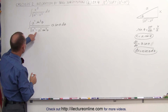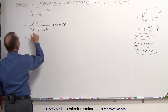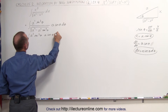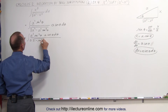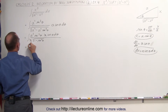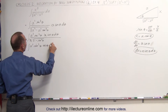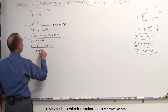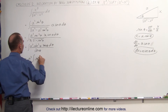Now we need to simplify that. We can factor out an a squared from the denominator. This becomes equal to the integral of a cubed times sine cubed of theta times a cosine of theta d theta. In the denominator, factoring out a squared gives a times the square root of 1 minus sine squared of theta, which becomes cosine squared of theta. The square root of cosine squared is simply cosine of theta, which cancels, giving us a cubed times the integral of sine cubed of theta d theta.